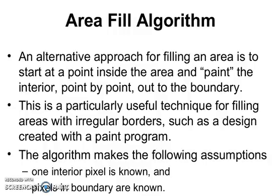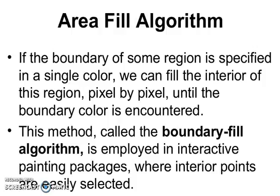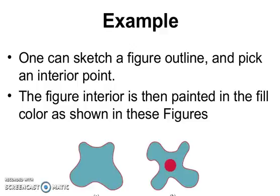An alternative approach for filling an area is to start at a point inside the area and paint the interior point by point until we reach the boundary. This is a useful technique for filling areas which have irregular bodies, such as designs created with a paint program. The algorithm assumes one interior pixel is known and the boundary pixels are known. If the boundary of some region is specified in a single color, we can fill the interior pixel by pixel until the boundary color is encountered — this method is called the boundary fill algorithm. This is employed in interactive painting packages where the interior points are easily selected. One can sketch a figure outline and pick an interior point, called the seed point.